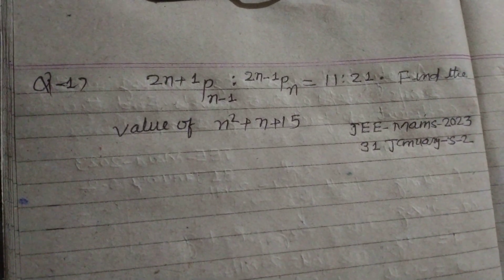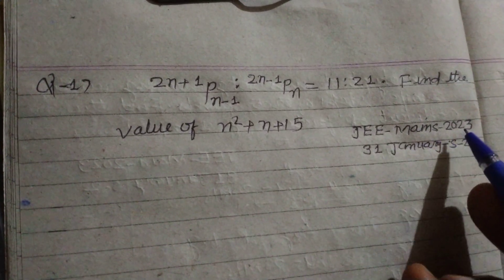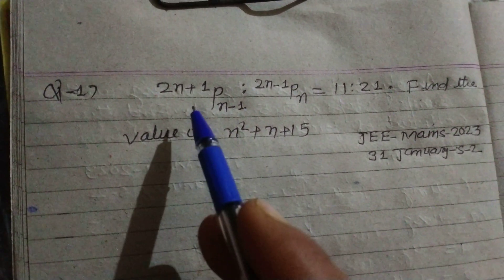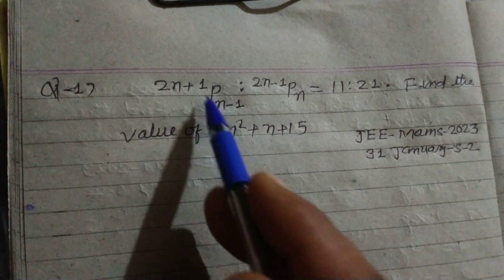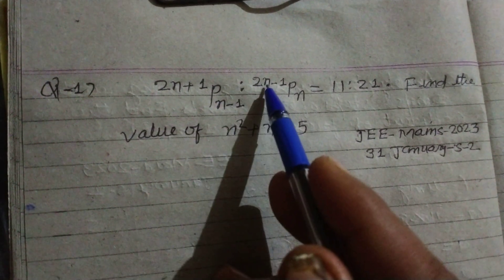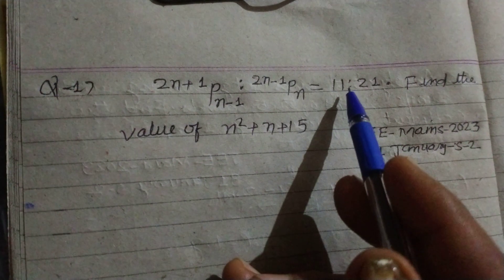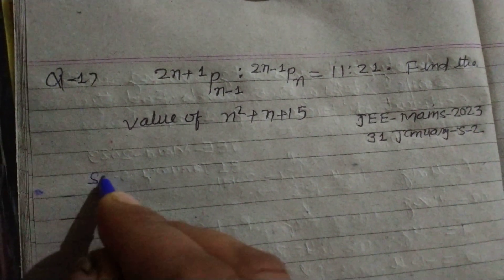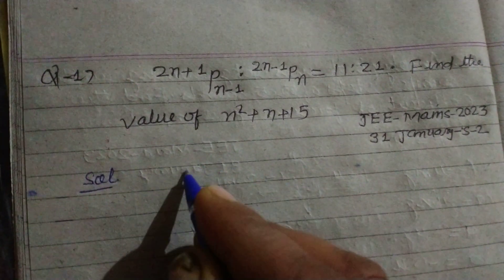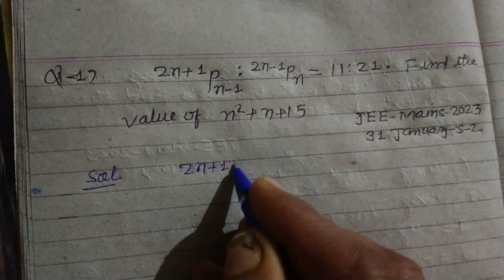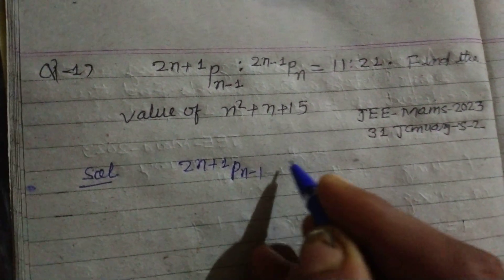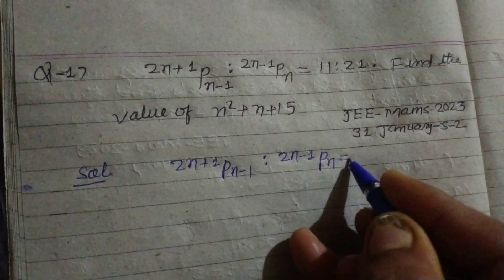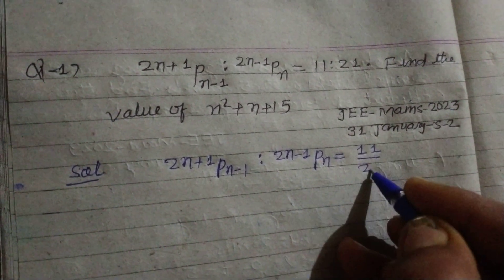Hello student, welcome to this YouTube channel. This question is from JEE 2023, 31st January shift 2. The question is related to permutations: the ratio of (2n+1)P(n-1) to (2n-1)Pn equals 11 upon 21. Find the value of n² + n + 15. So first we write the given ratio (2n+1)P(n-1) to (2n-1)Pn equal to 11 upon 21.